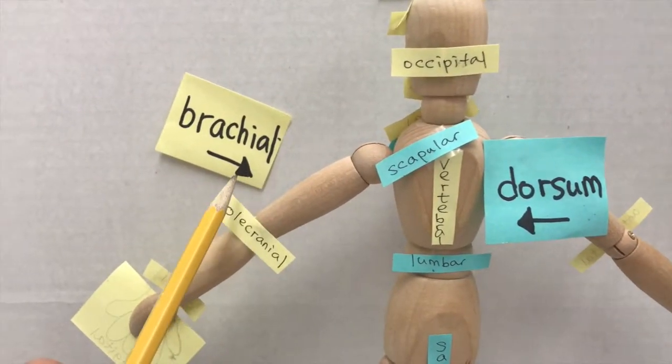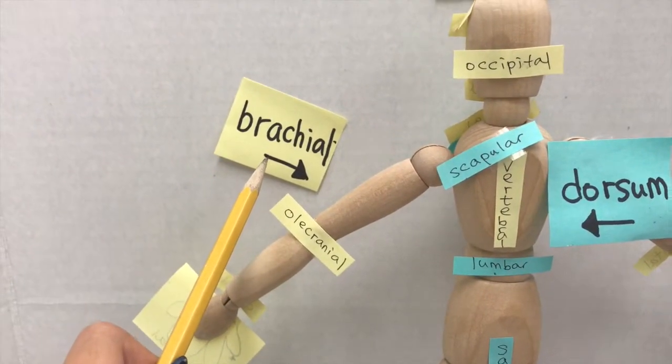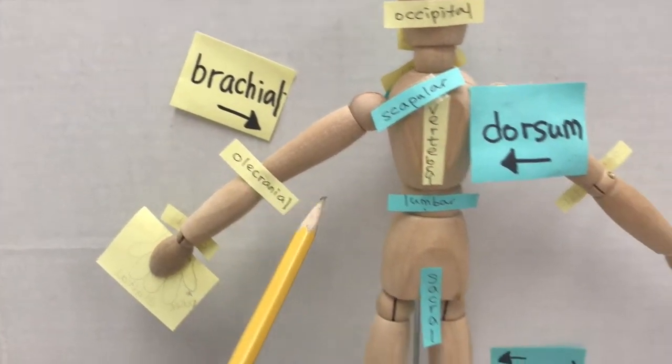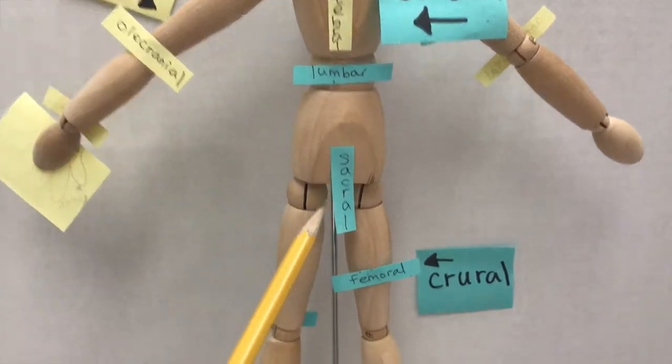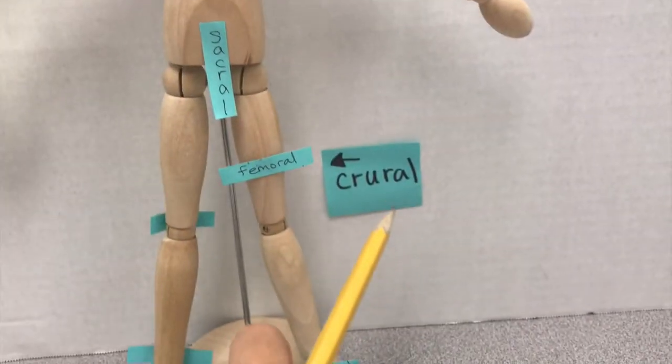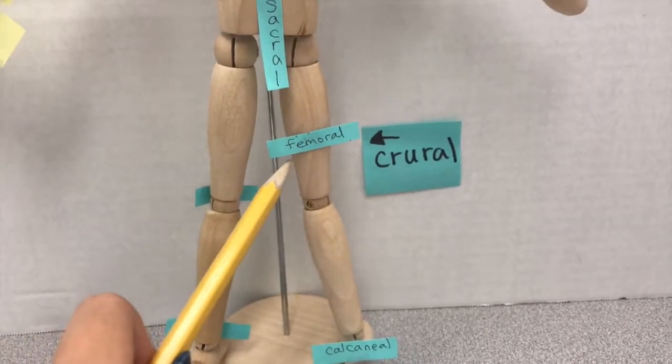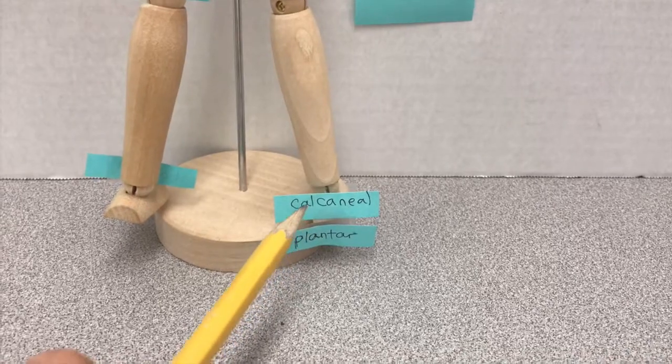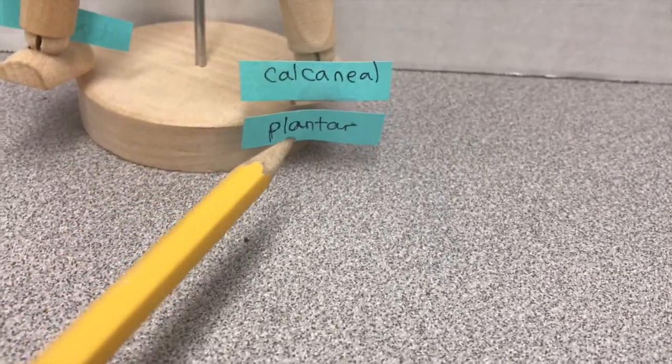And in brachial (arm), we have olecranal (back elbow). And then going further down, we have sacral (between hips). And in crural (leg), we have femoral (thigh). And we have calcaneal (heel), and plantar (sole).